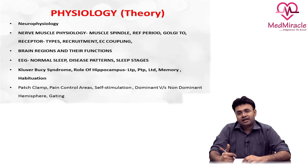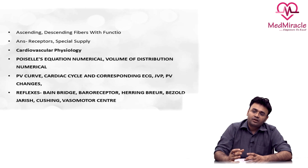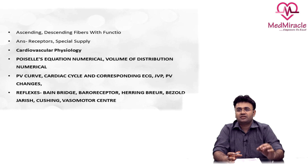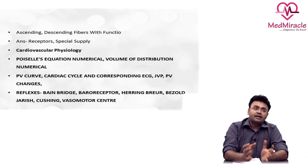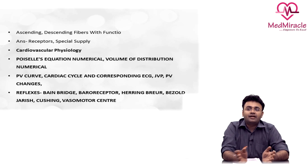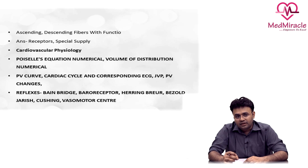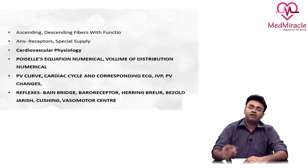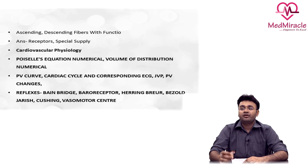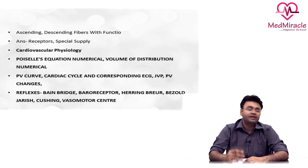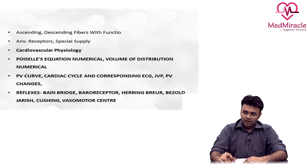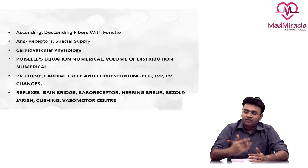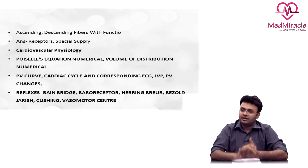The second unit to focus on after neurophysiology is cardiac physiology. Cardiac physiology is beautifully described in Guyton, which is the ideal textbook, but it is very lengthy. If you are an intern, Guyton should only be used as a reference book. For first-year MBBS students interested in depth, Guyton is the best choice, as it best covers the various changes in the cardiac cycle and the PV loop.